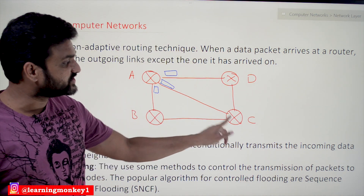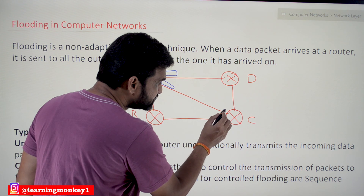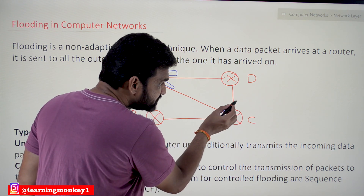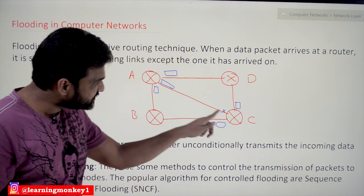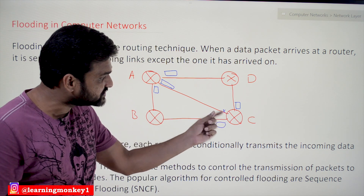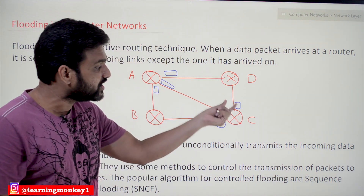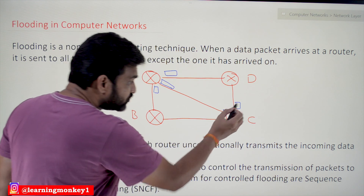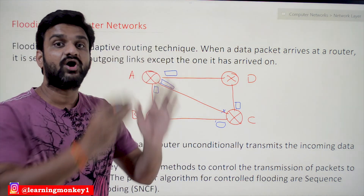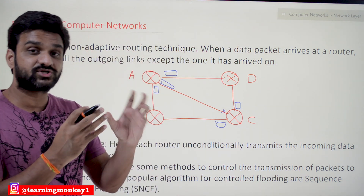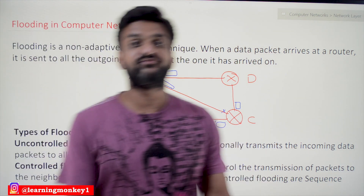The packet will be received at C, D, and B. When this packet is received at C, excluding the link through which the packet has arrived, it is going to transmit to all other interfaces. So the packet arrived through one interface, and it will exclude that interface and send through all the other interfaces. Through these remaining interfaces, the packet will again be transmitted to all routers to which those routers are directly connected. This is how the network gets flooded with packets.